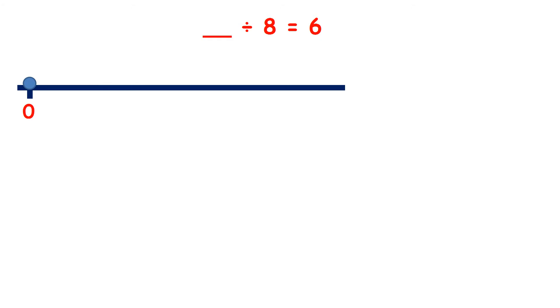Now we have something divided by 8 is 6. So how are we going to find our answer? Well, this question is telling us that when we divide a number into groups of 8, we get 6 groups. So let's make 6 groups of 8.